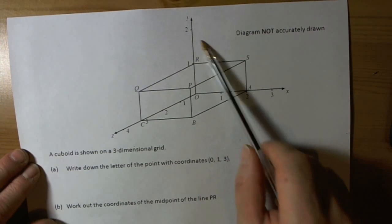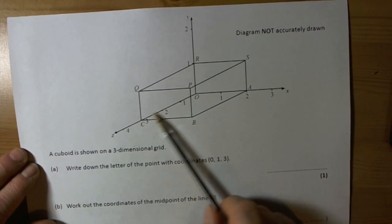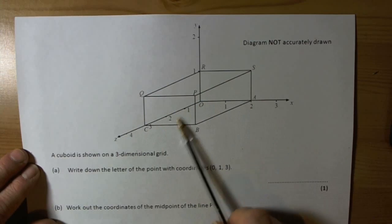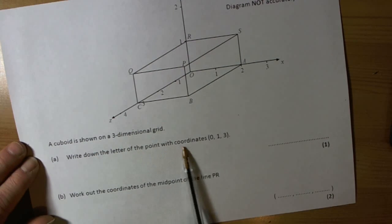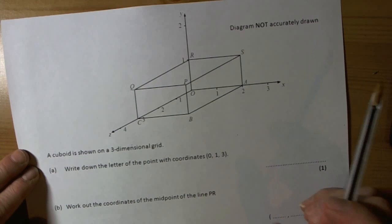Okay, so this question has got a 3D picture of a box, so it's kind of highly likely to be about 3D coordinates. A cuboid has been shown. Write down the letter of the point with the coordinates (0, 1, 3). So 3D coordinates.